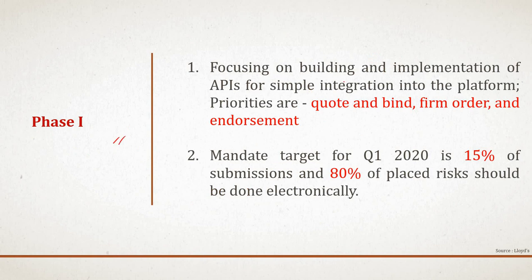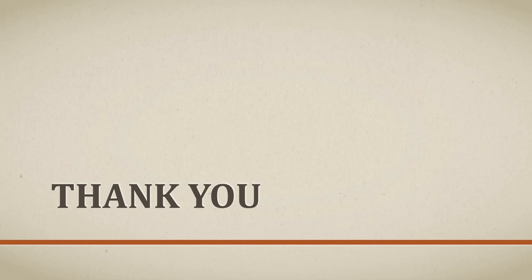In phase one, the focus will be on building and implementing APIs for simple integration into the platform. The priorities are quote, bind, firm order, and endorsement to be brought into the system through APIs. A mandate target for Q1 2020 is that 50% of submissions and 80% of placed risks should be done electronically. Phase one also covers development of new capabilities on top of PPL covering endorsement and firm order, usability improvements to PPL, defect fixing, and commencement of replatforming of the current document-plus solution. Vendors identified include DXC, Exchange Sure Pro, and TCS.